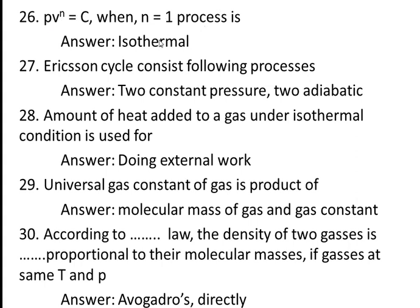Twenty-sixth question: PV^n = constant. When n = 1, the process is called isothermal. When n = 0, it becomes P = constant, which is an isobaric process. When n = infinity, volume dominates and it is an isochoric process. When n = 1 (asked in the question), the answer is isothermal process. When n = gamma (the adiabatic index), we call it an adiabatic process.